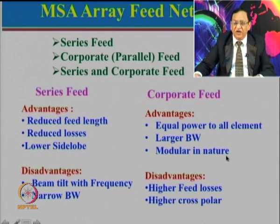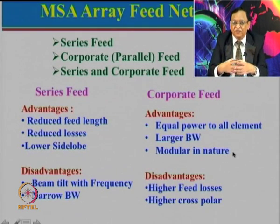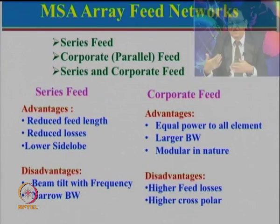Being modular means that if you have designed a 2×2 array, making a 4×4 array is relatively simple — just extend the 2×2 concept to 4×4, then 4×4 to 8×8, or 4×8. Similarly, from 8×8 you can go to 16×16, from 16×16 to 32×32. A 32×32 array has 1024 elements. Most of the time people stop there, because after that feed losses become very large.